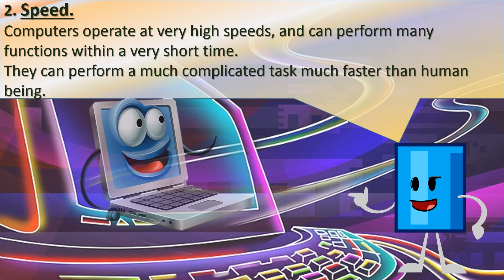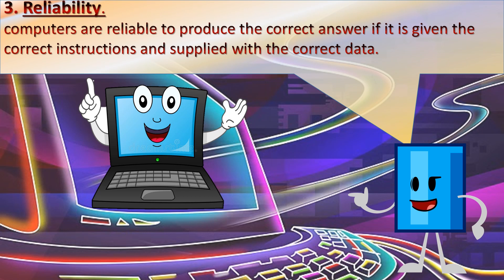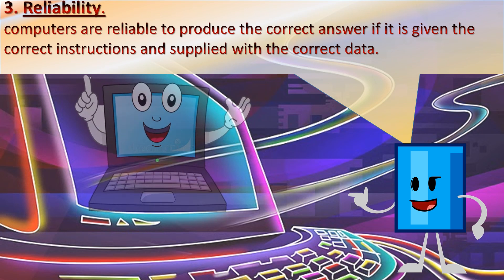2. Speed. Computers operate at very high speeds and can perform many functions within a very short time. They can perform a much complicated task much faster than a human being. 3. Reliability. Computers are reliable to produce the correct answer if given the correct instructions and supplied with the correct data.